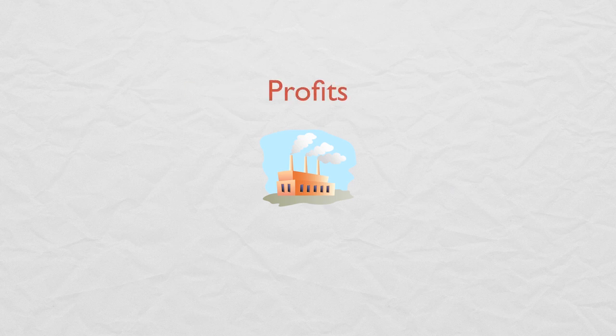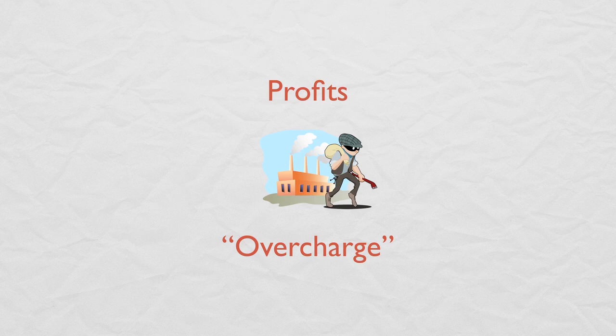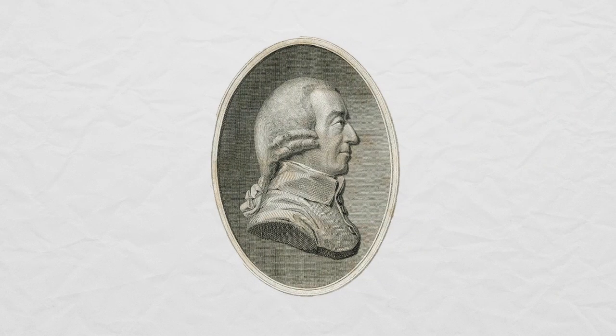For most of history, profits were referred to as overcharge. Merchants were seen as simply stealing from everyone else when they earned a profit. Adam Smith was the first to articulate the social value of profits, realizing that profits lead merchants to use resources and knowledge in an efficient way, which helps rather than hurts consumers.